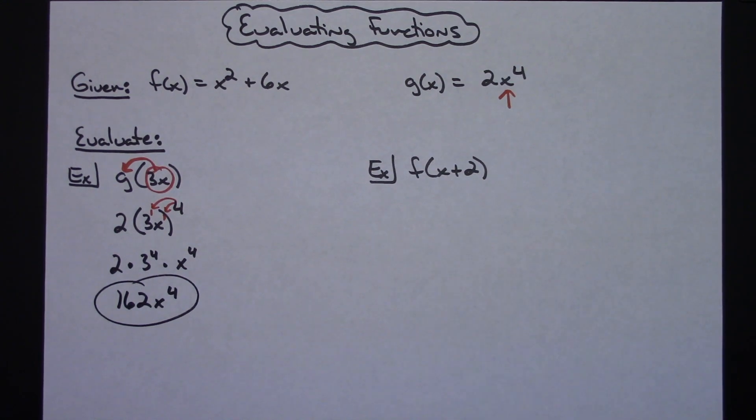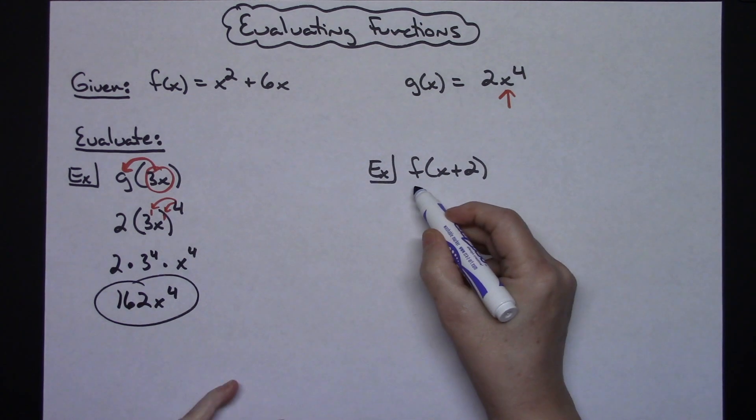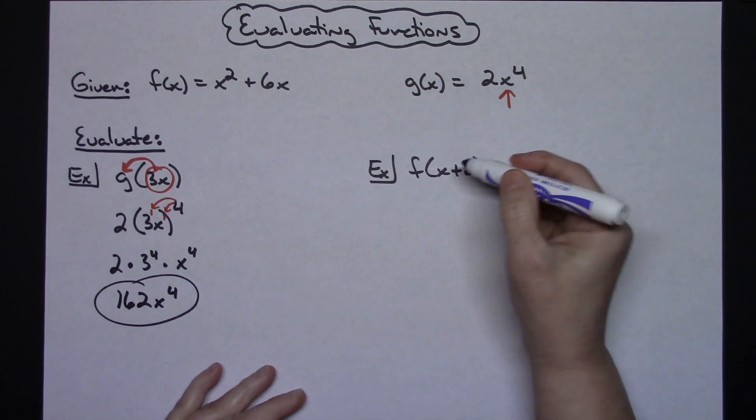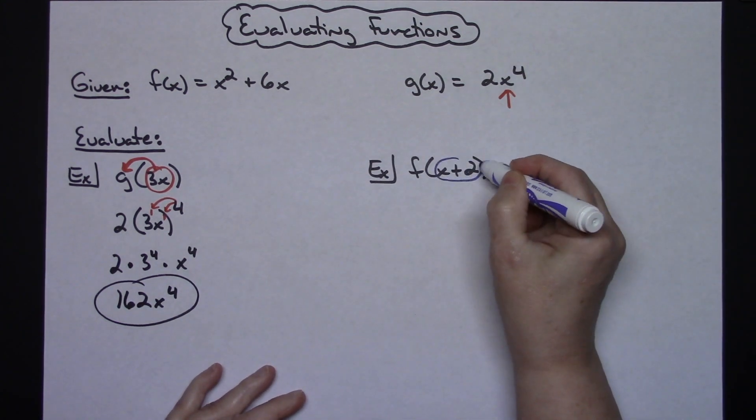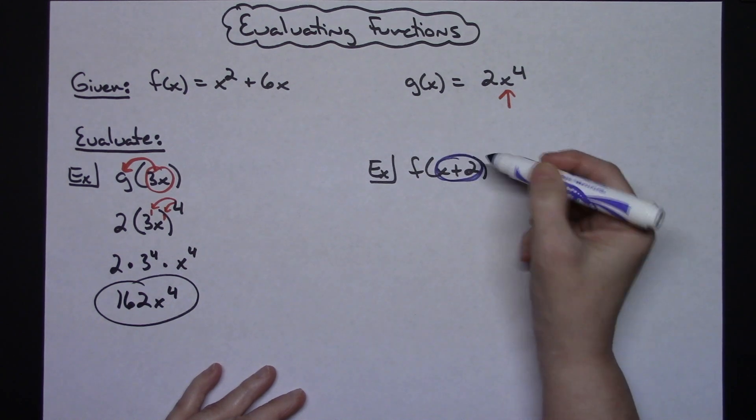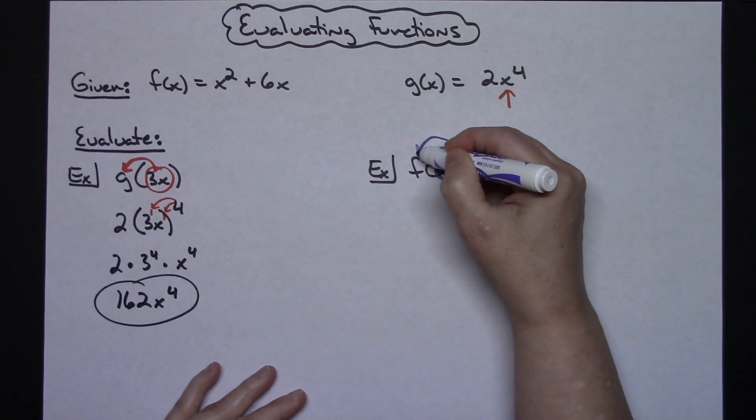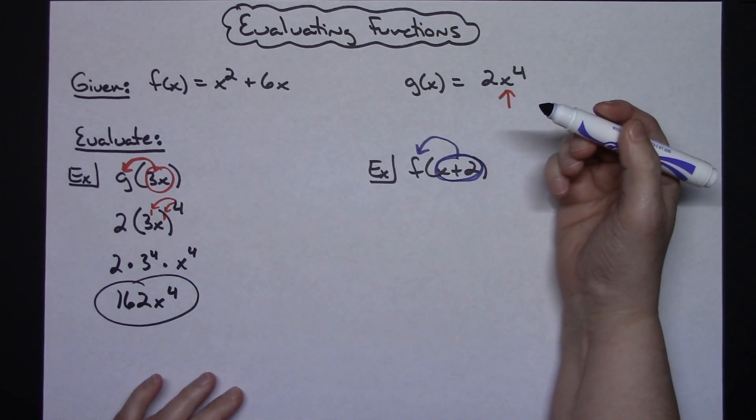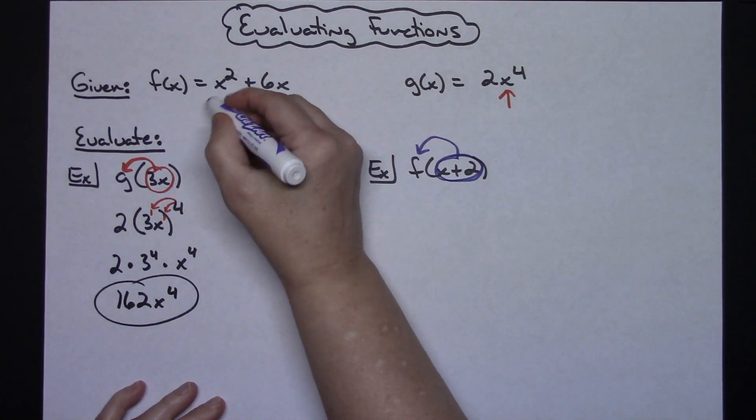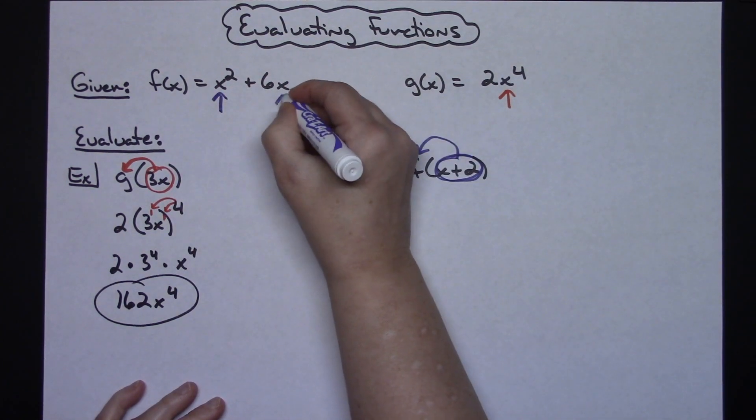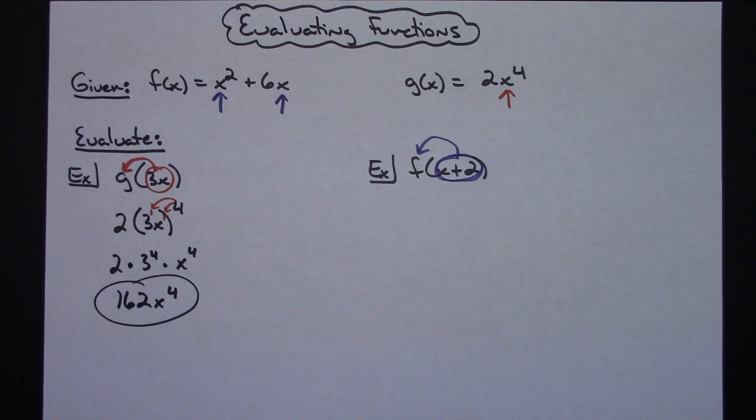Now let's take a look at the second one here. We've got f(x+2). Again, we're going to take a look at everything on the inside, x+2. This tells us to put it inside the f function. If I look at my f function, I have two locations where that can be put in.